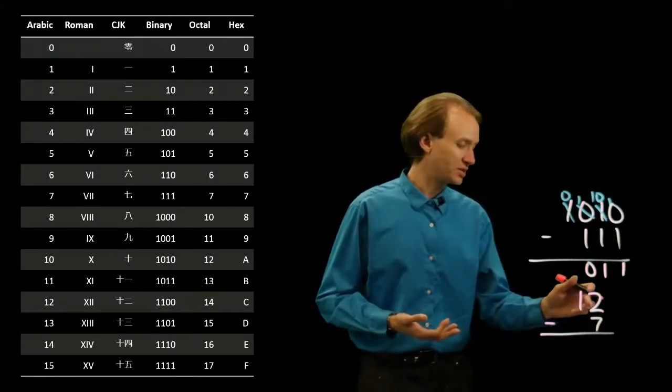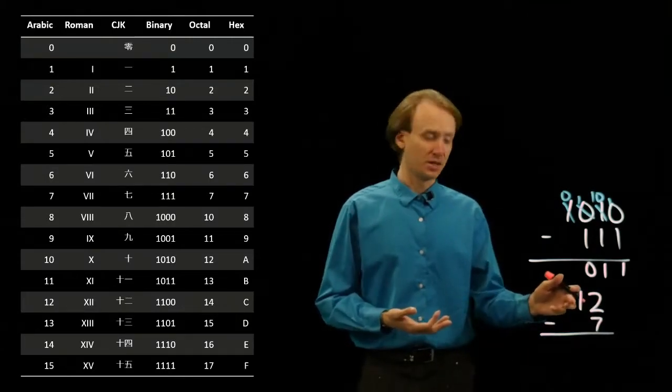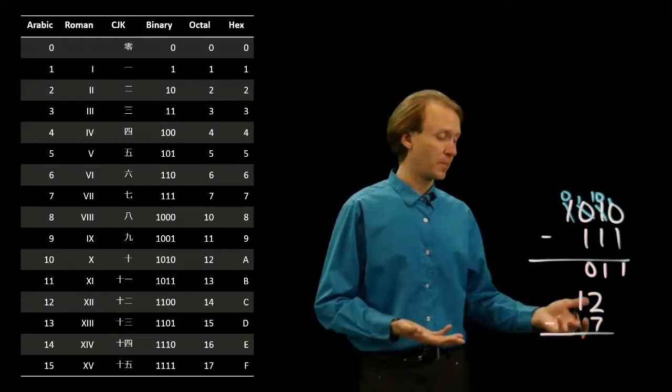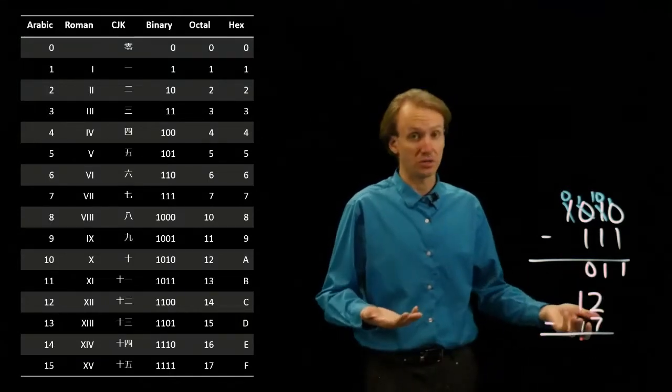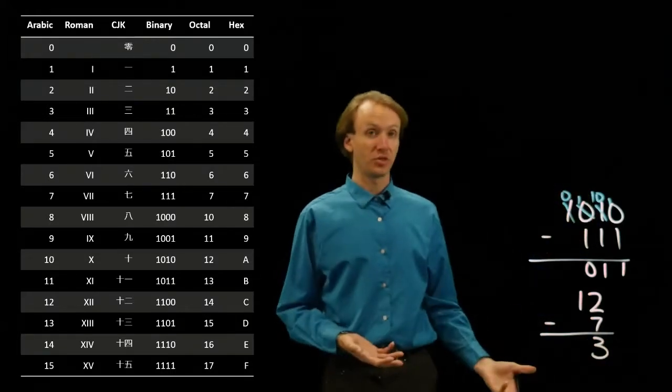7 didn't go into 2. So, maybe I should just subtract the 7 from the 10. So, 10 minus 7 leaves me with 1 in octal. And then I can do 1 plus 2 gives me 3 as well. So, in both cases, I end up with 3.